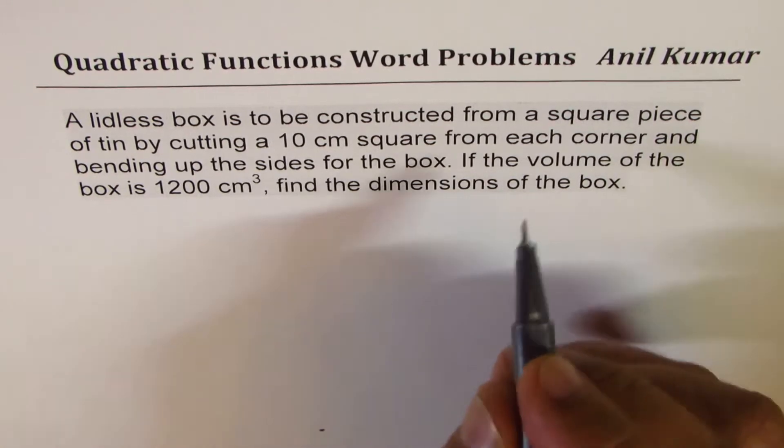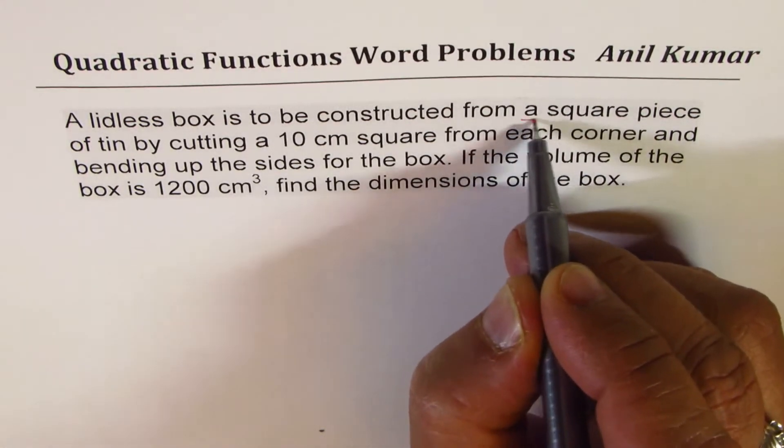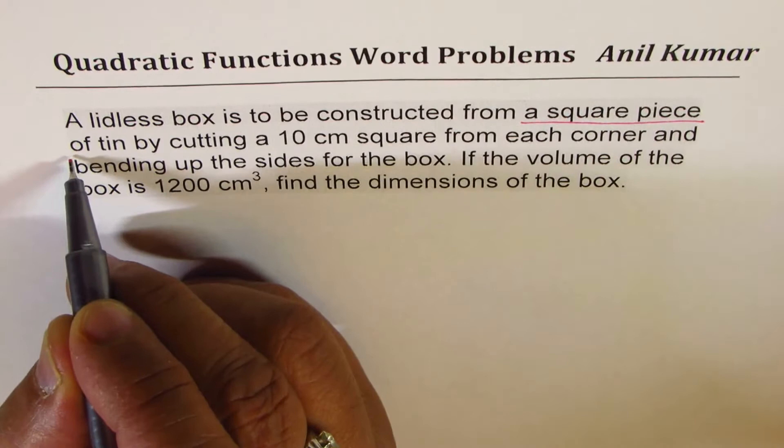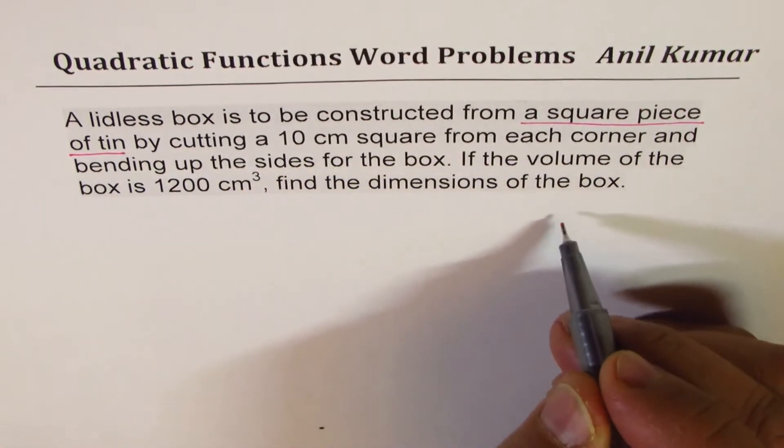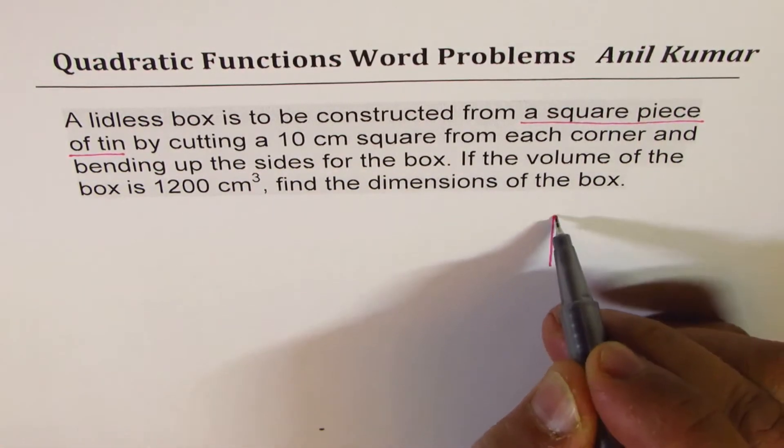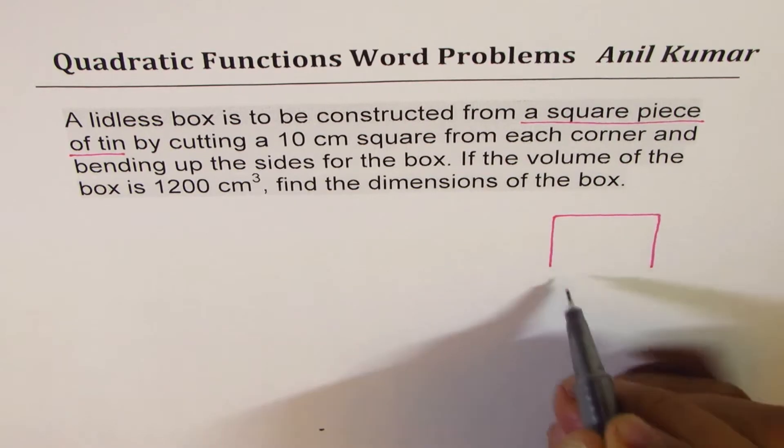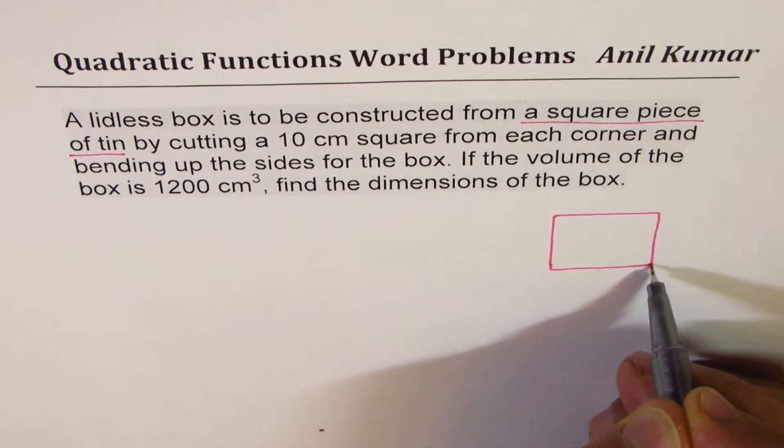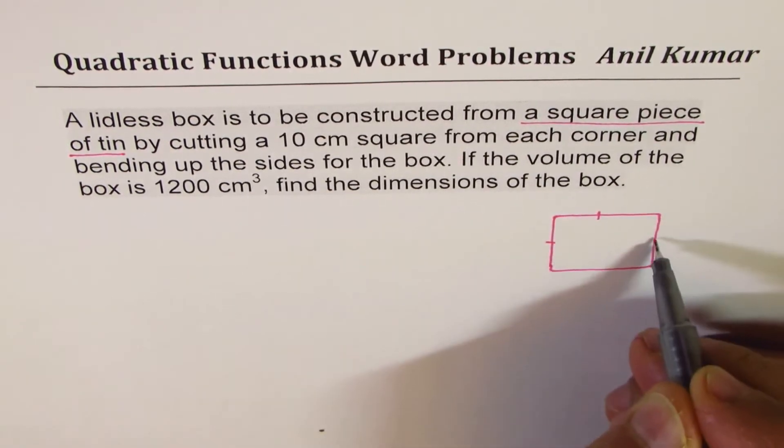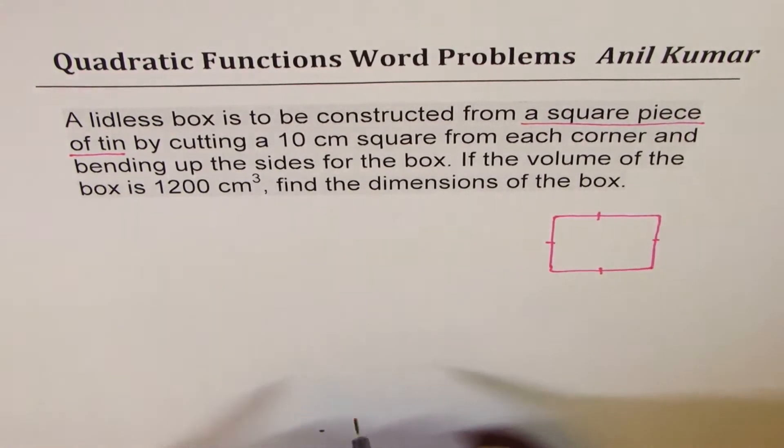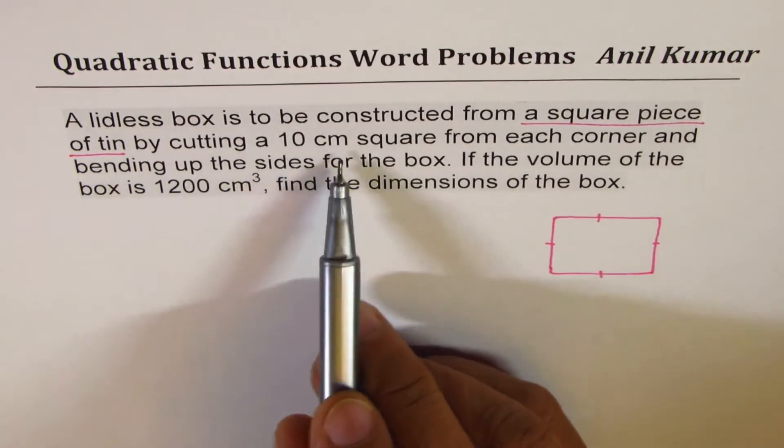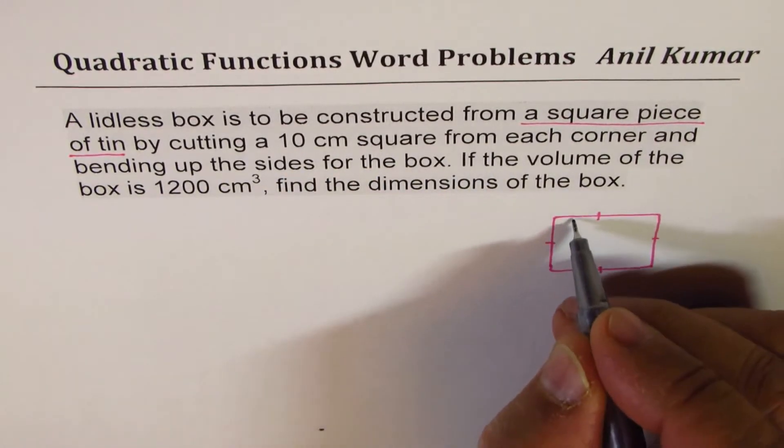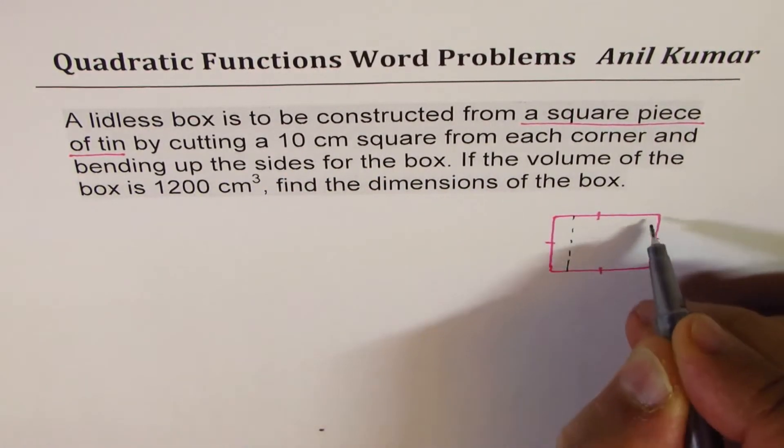What we are given here is a square piece of tin. Now square means all sides are equal, so this is very important information which we should not skip. Now the second step is by cutting 10 centimeter squares from each corner, so when I have to cut from each corner it's a good idea to draw these dotted lines as you must have seen in many books.